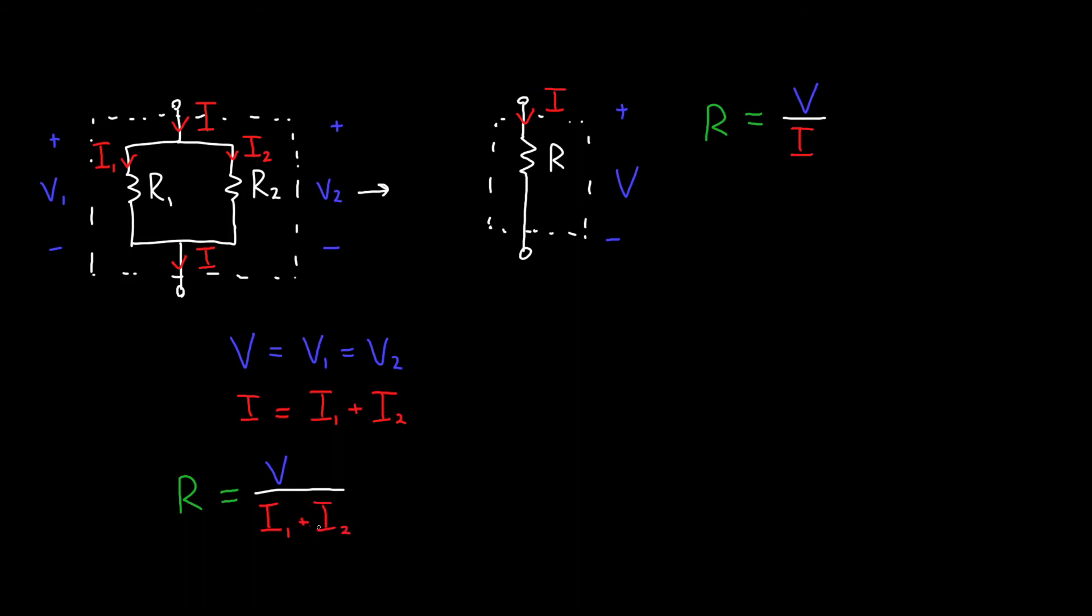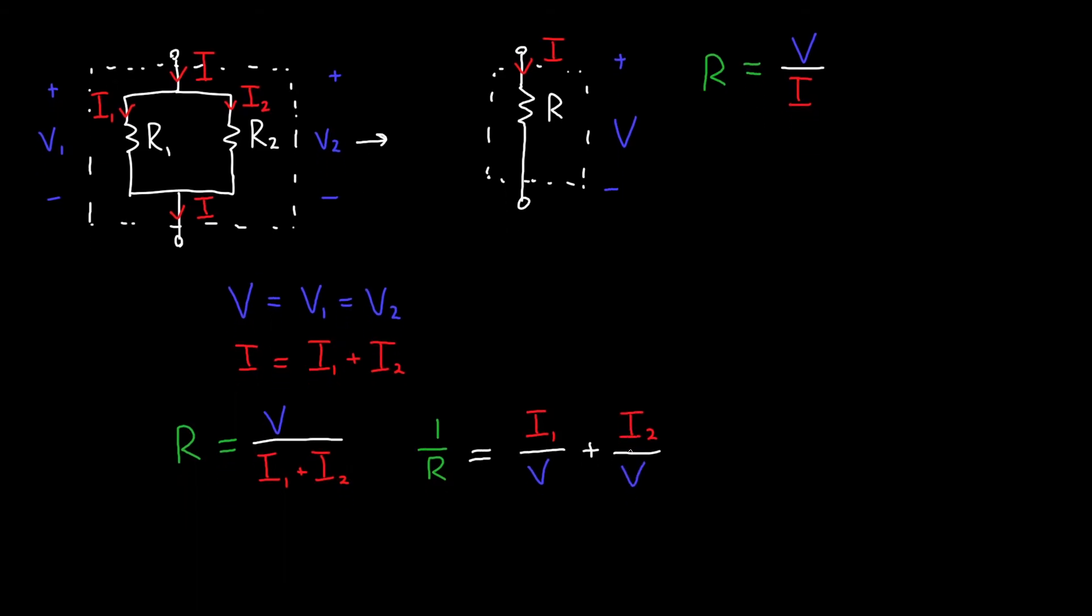Now it's not really obvious how we decompose this into R1 and R2. But if we were to flip everything, then we could very easily separate stuff. So if we instead take 1 over R, that's equal to I1 over V plus I2 over V. And this on the left is just equal to 1 over R1, because it's the current over the voltage. And on the right, this is 1 over R2.